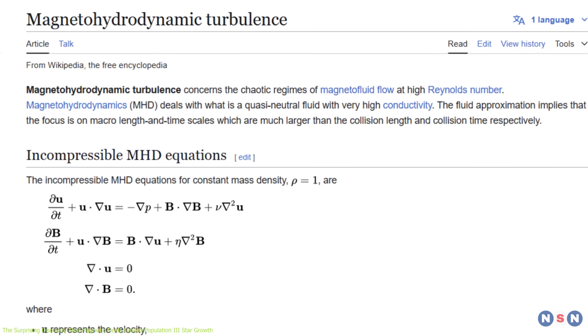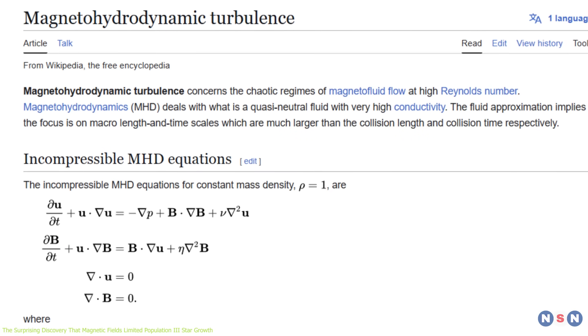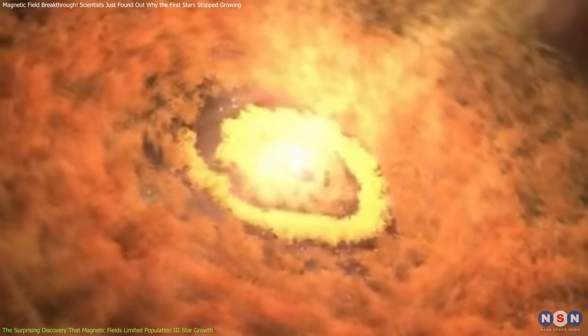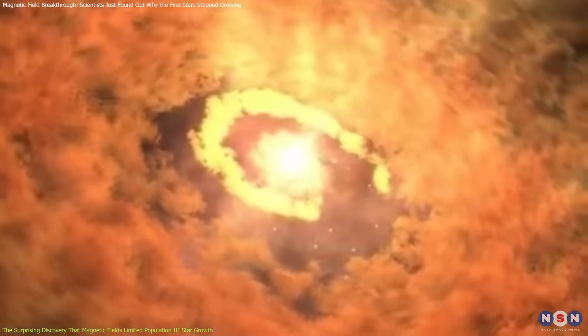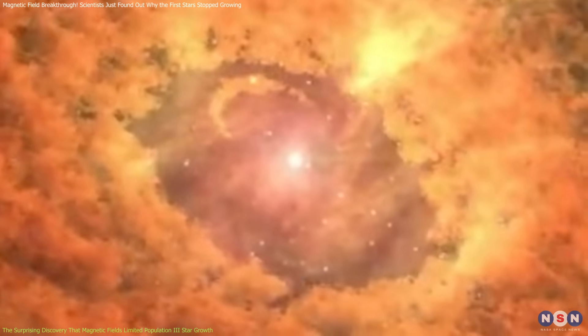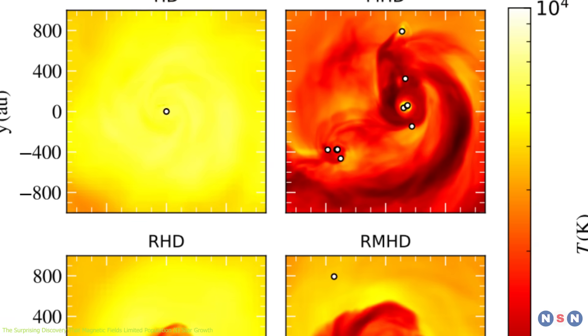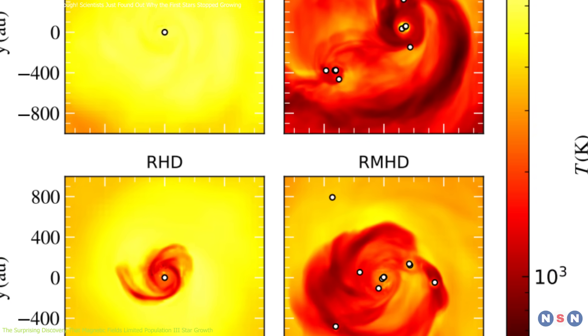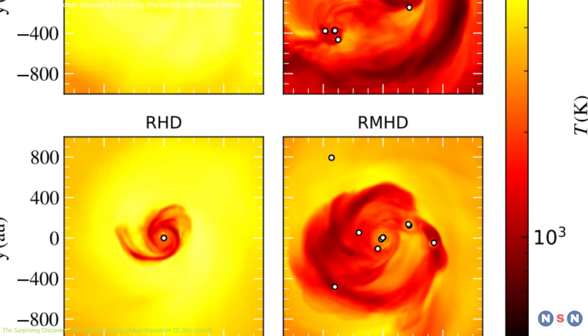But how exactly did this happen? The answer lies in magnetohydrodynamic turbulence. As gas flows toward a forming star, magnetic fields introduce turbulence that disrupts the smooth accretion of material. Instead of falling neatly into the star, much of the gas gets redirected or blown away, significantly reducing the amount of material that can actually be absorbed.